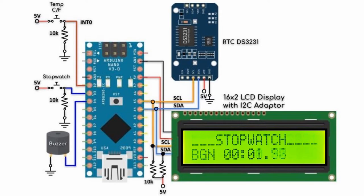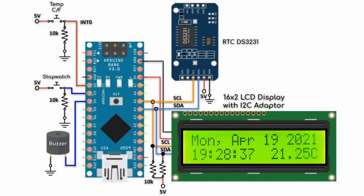Pressing the stopwatch button will start the stopwatch count. We press the button again to stop the count, and we press the button to exit the stopwatch and go back to the real-time clock.